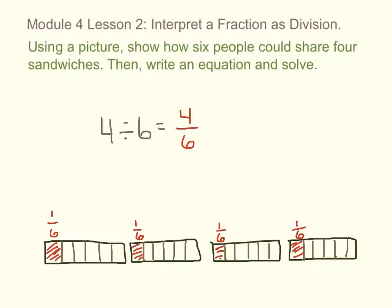And then I can simplify my 4 sixths by dividing the top and bottom by 2, or dividing it by 2 over 2. Each person gets 2 thirds a sandwich.